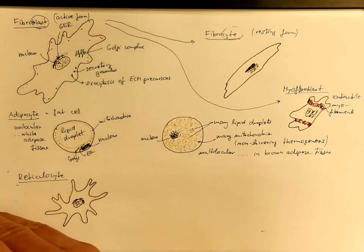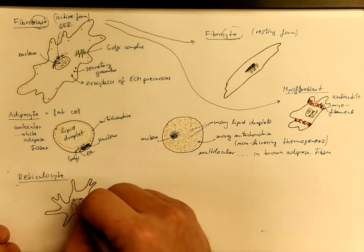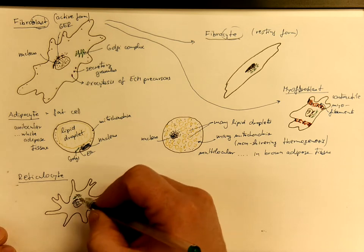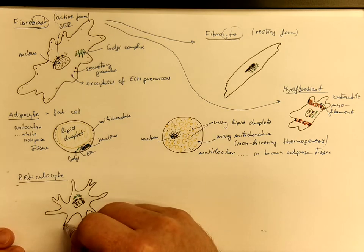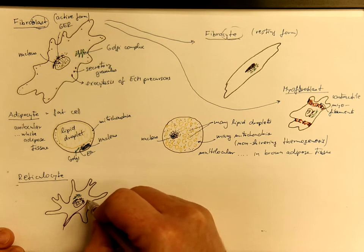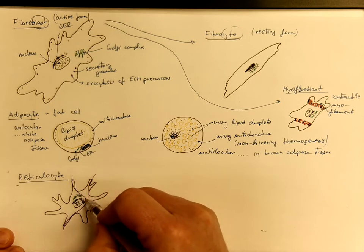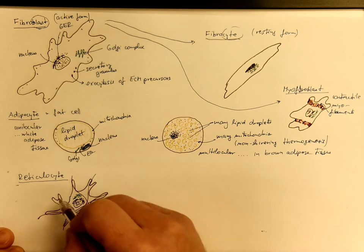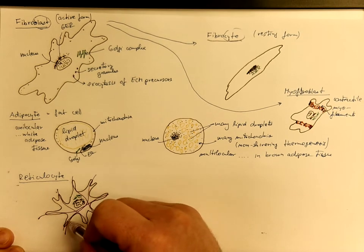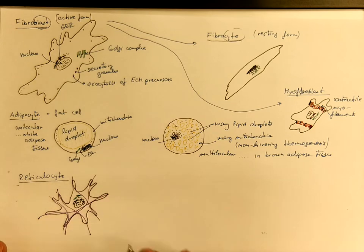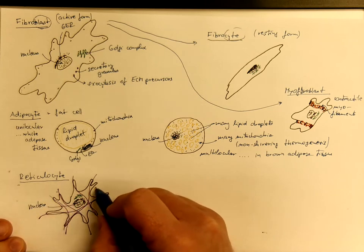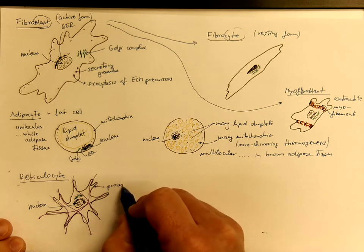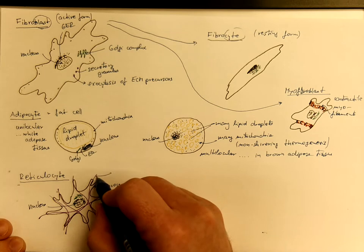So the endoplasmic reticulum and the Golgi complex preparing the molecules for exocytosis. But the point here is that these cells are producing reticular fibers that are stretched among the cell processes. They embrace the fibers with their cell processes. So we have the nucleus here, the processes, and the reticular fibers.